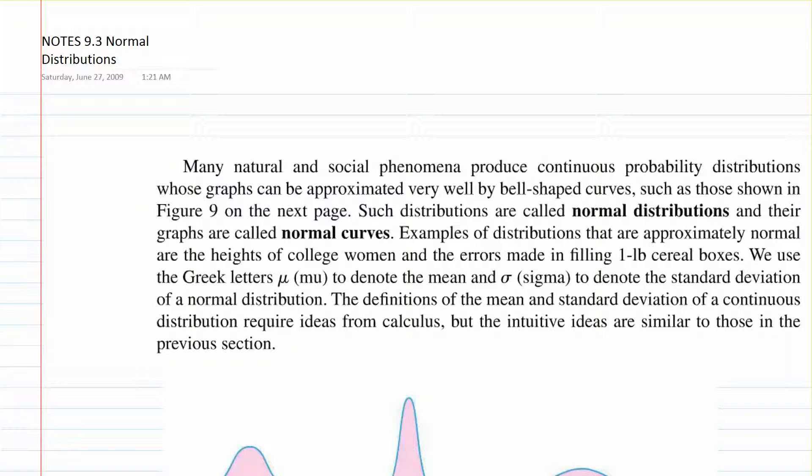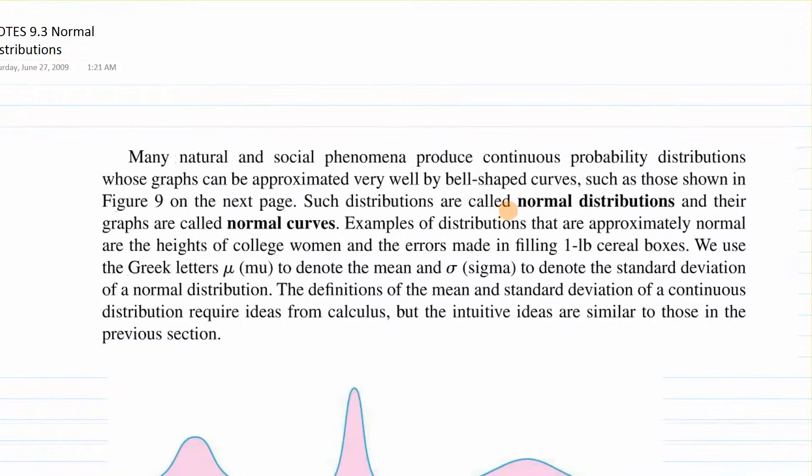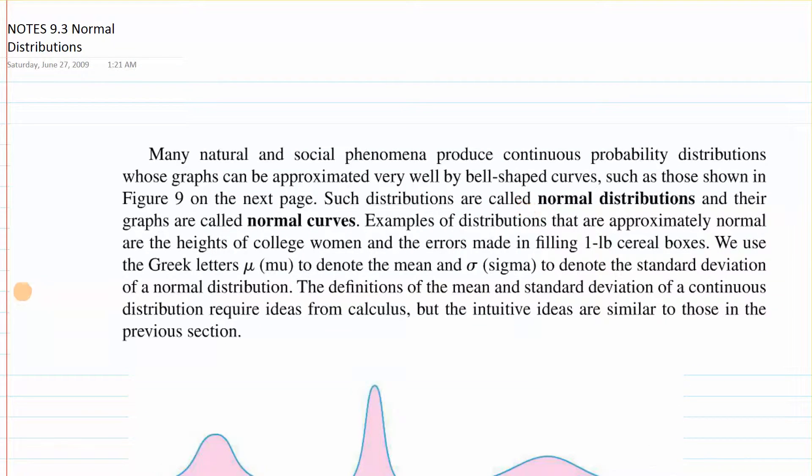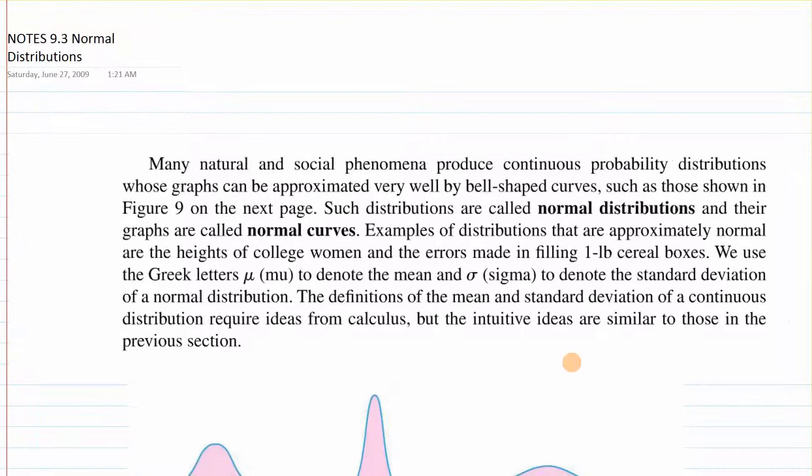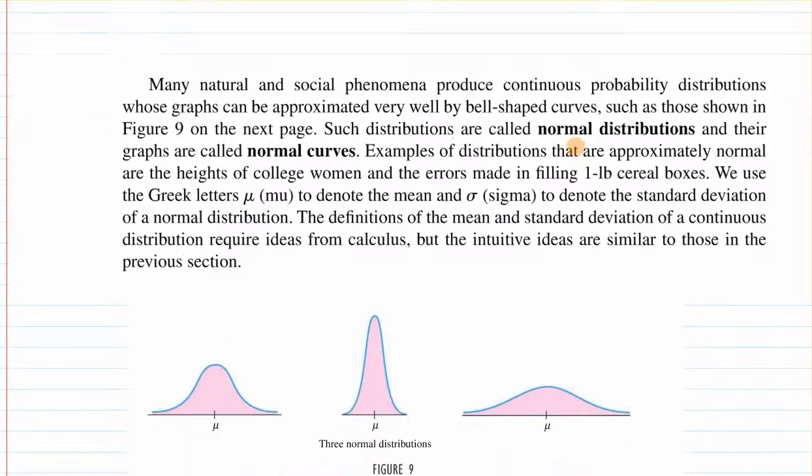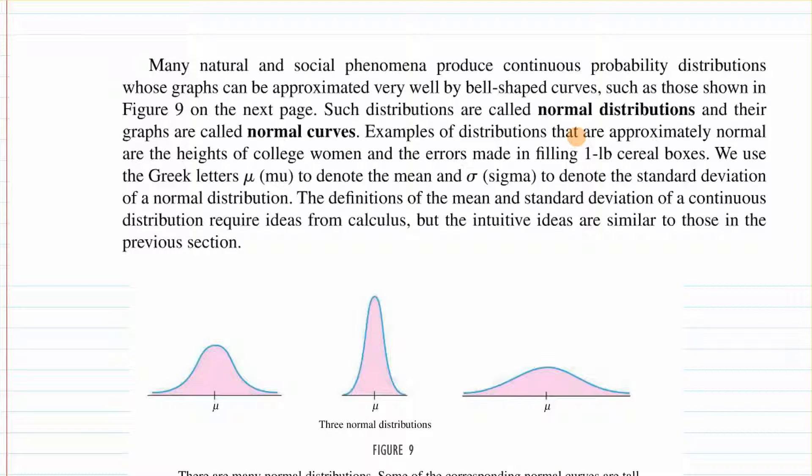This is section 9.3, Normal Distributions. If we look at this paragraph pulled from the book, many natural and social phenomena produce continuous probability distributions whose graphs can be approximated by bell-shaped curves, such as these shown in the diagram. These are called normal distributions, and their graphs are called normal curves.